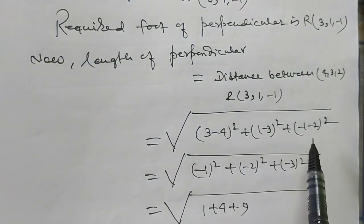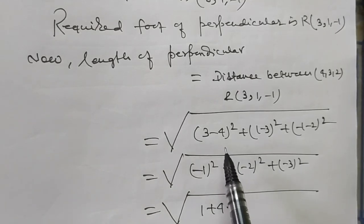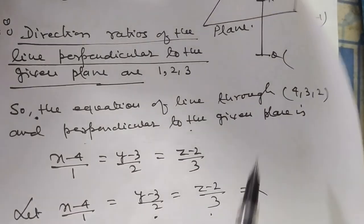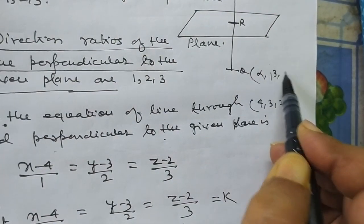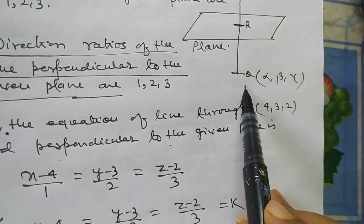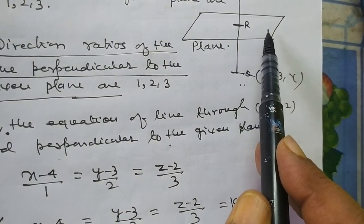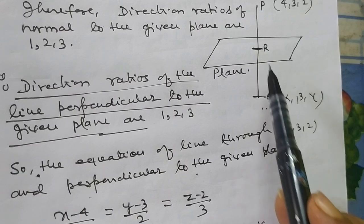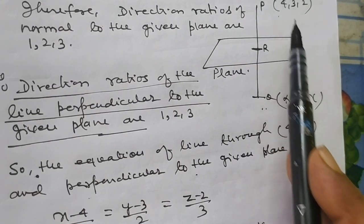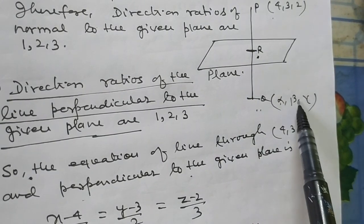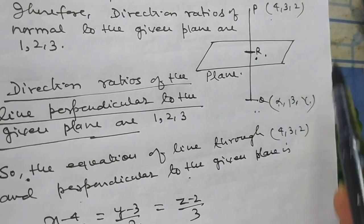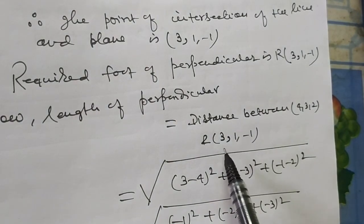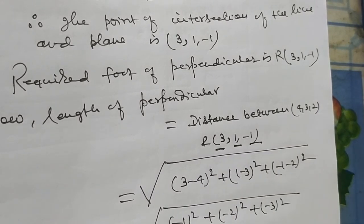Now applying the distance formula between two points, we get distance = root 14 units. Let Q(alpha, beta, gamma) be the image. The coordinate of R will be the midpoint of P and Q, and we have determined the value of R — the foot of the perpendicular — which is the midpoint. So: (alpha + 4)/2 = x-coordinate of R, (beta + 3)/2 = y-coordinate of R, (gamma + 2)/2 = z-coordinate of R. In this way, by getting the x, y, z coordinates of R, we can find the distance.